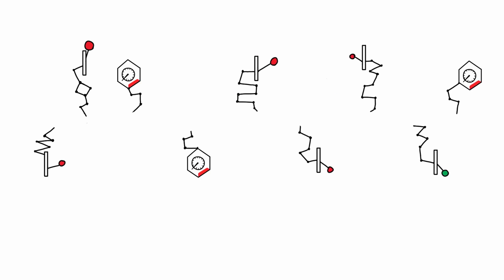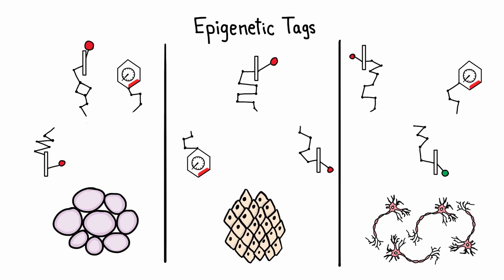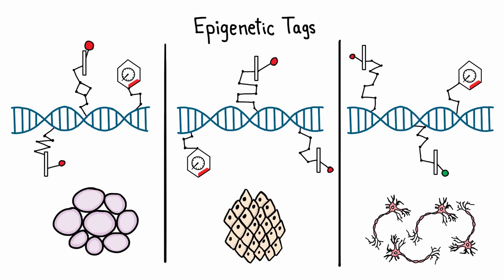These switches, called epigenetic tags, are why a kidney cell looks and acts differently than a skin or nerve cell, even though all three cells have identical DNA.